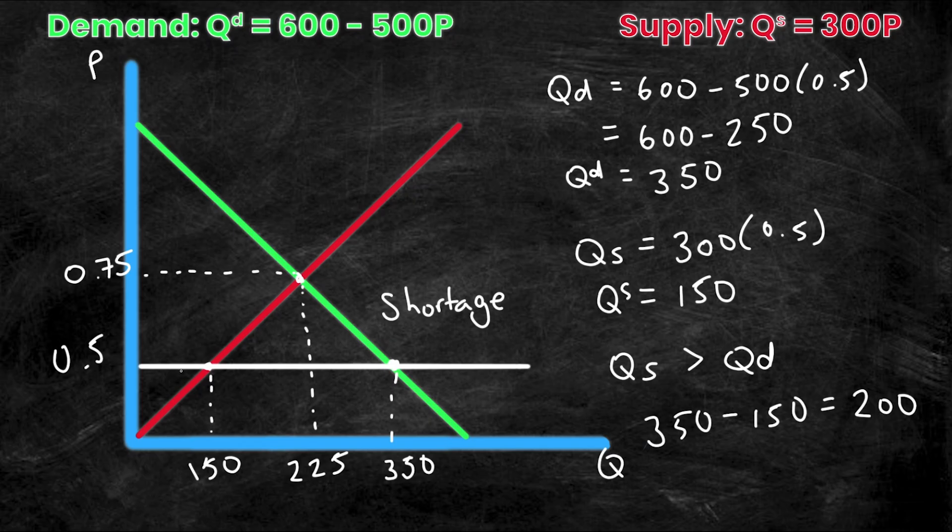Well, 150 units, because even though there's demand way up here, there's no supply. And therefore, you cannot actually trade more than 150 units. So the new point of trade happening in this market would be a price point of 0.5 and a quantity value of 150.